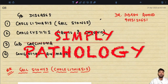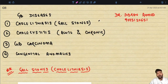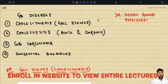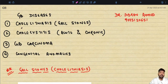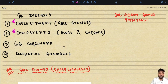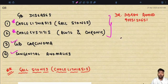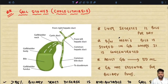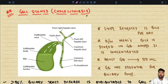Dr. Gibran Ahmad presents Simply Pathology. Today we are going to read about the diseases associated with the gallbladder, mainly discussing gallstones (cholelithiasis) and acute and chronic cholecystitis. In the next lecture, we will cover gallbladder carcinoma and congenital anomalies. Today's topic is relatively simple but the concepts are very important and frequently asked in exams.